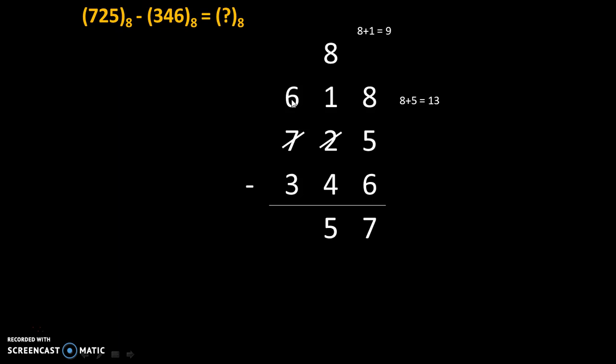And finally 6 minus 3 is 3. So our answer is 357. Therefore 725 to the base 8 minus 346 to the base 8 is equal to 357 to the base 8.